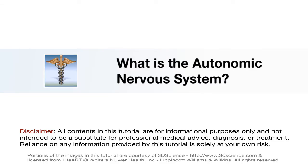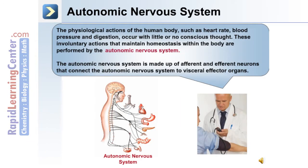Let's begin with an overview of the autonomic nervous system. The physiological actions of the human body, such as heart rate and blood pressure, as well as digestion, occur with little or no conscious thought. These involuntary actions maintain homeostasis in the body, and they're performed by the autonomic nervous system. The autonomic nervous system is made up of afferent and efferent neurons that connect it to visceral effector organs.